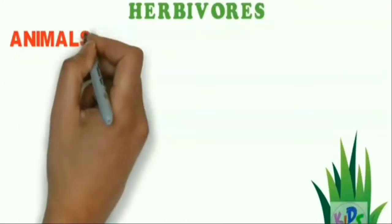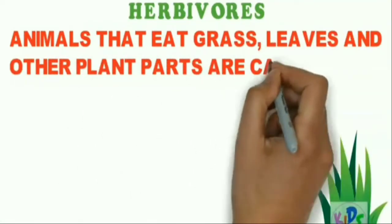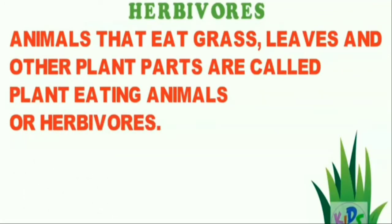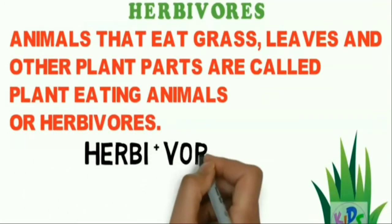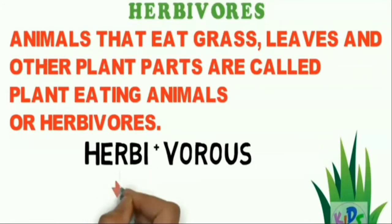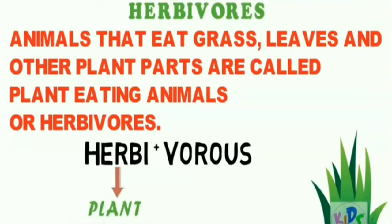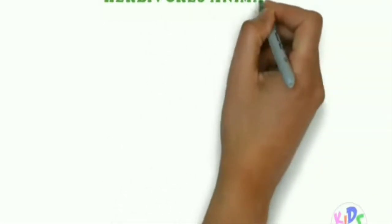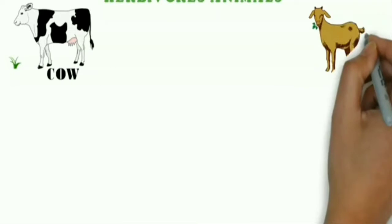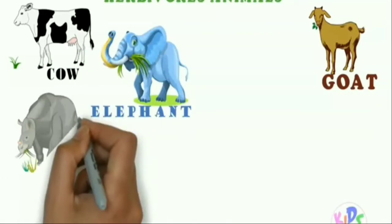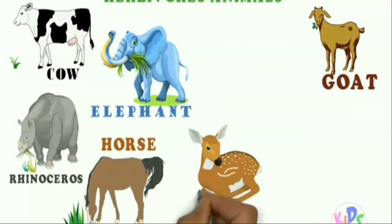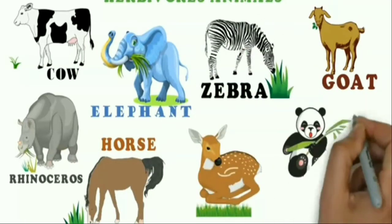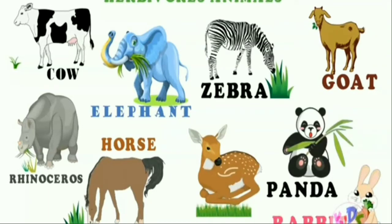Let's learn who are herbivores. Animals that eat grass, leaves and other plant parts are called plant-eating animals or herbivores. The term herbivore is made up of 'herba' plus 'vorus,' where herba means plant and vorus means eating. The various examples of herbivores are cow, goat, elephant, rhinoceros, horse, deer, zebra, panda, rabbit and many more.